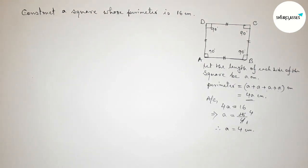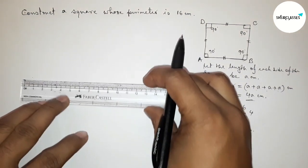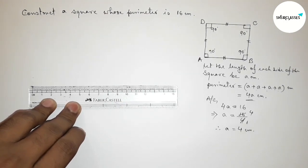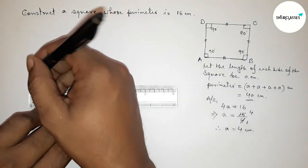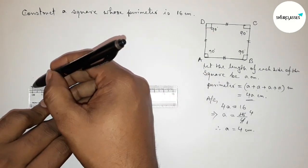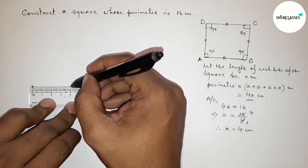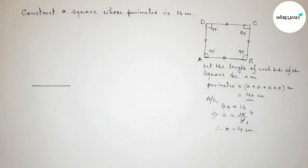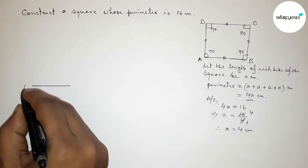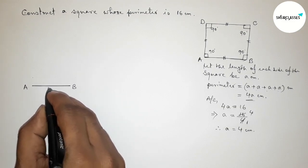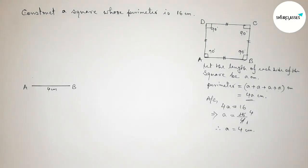Now we have to create a square of side 4 centimeters. First, drawing a line segment of length 4 centimeters — marking 0, 1, 2, 3, 4. This is a 4 centimeter line segment. Taking point A at the start and point B at the end, so AB = 4 centimeters.